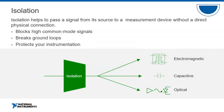Isolation helps pass the signal from its source to the measurement device without a physical connection, using transformer, optical, or capacitive coupling techniques. Isolation helps reduce noise by breaking ground loops. It also blocks high-voltage surges and rejects high common-mode voltages, which protects both the operators and the expensive measurement equipment. Amplification, attenuation, filtering, and isolation are four of the most common types of signal conditioning to consider when setting up your DAQ system.